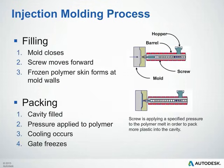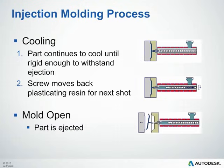Now we'll take a quick look at the injection molding process. This process is typically made up of several phases. The first one being filling — the mold closes and the screw moves forward to inject our polymer into the mold cavity, and we start forming a thin skin on the mold wall. Packing: the cavity finishes filling under pressure control, and we hold pressure on the polymer as the part cools and the gate freezes off. After the packing phase, we move into the cooling phase, where the part simply continues to cool until it's rigid enough to withstand being ejected from the mold.